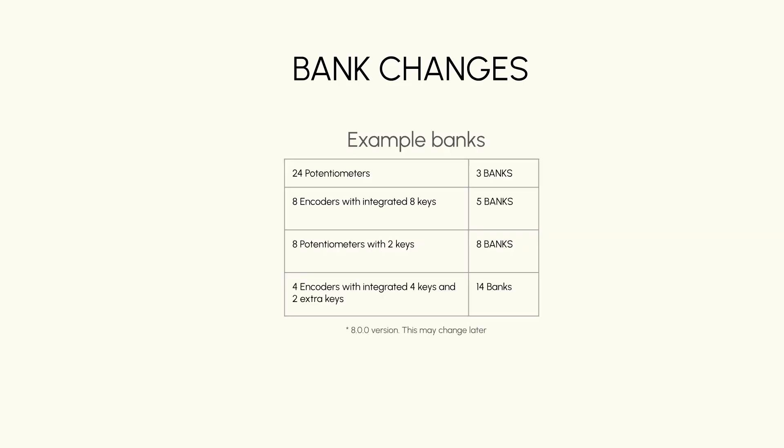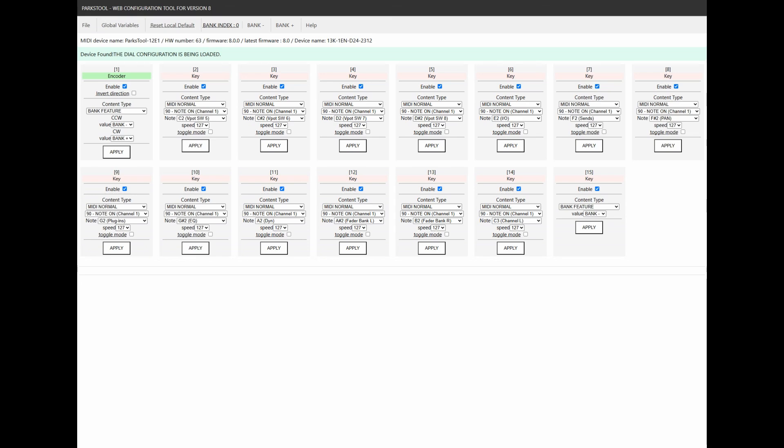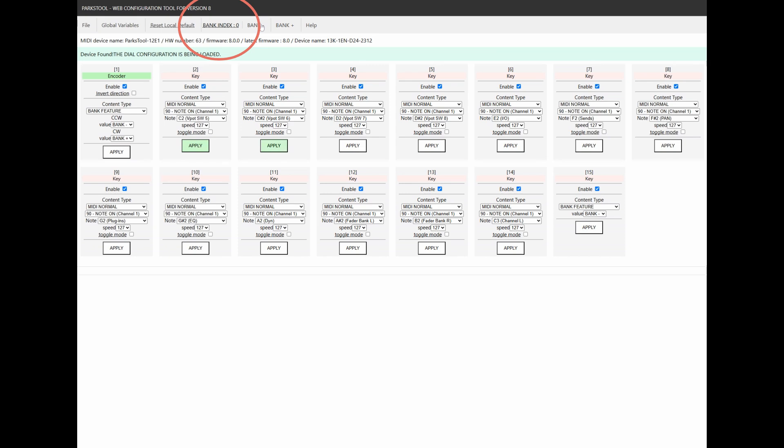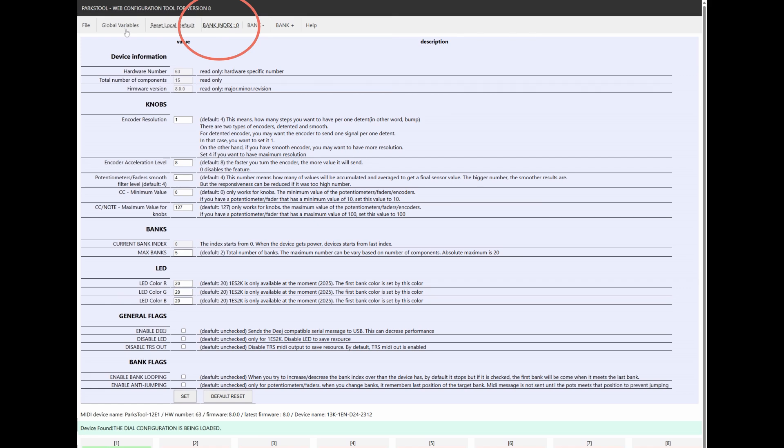You can easily set the number of banks using the Web Configuration Tool. Here's an example of how I set up this device to use multiple banks, allowing it to have octaves. You can check the current bank index from the top menu. To switch banks, simply press the Bank Minus or Bank Plus button in the menu. Now let's set the maximum number of banks. Click on the Global Variables menu. Set the maximum number of banks to 5. Don't forget to click the Set button.